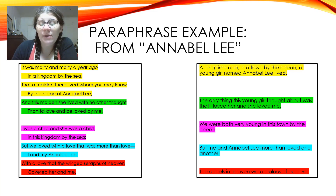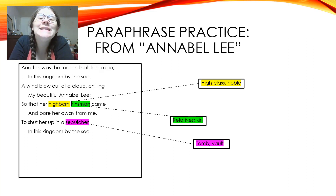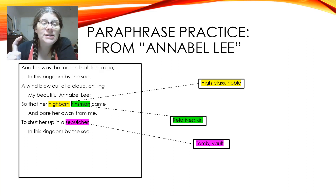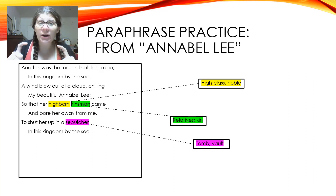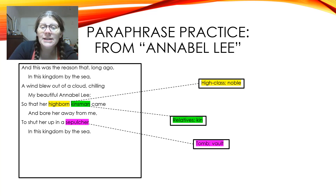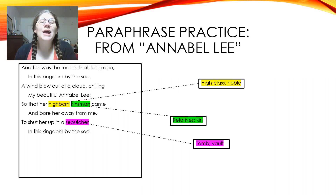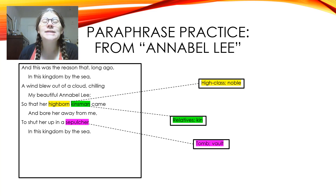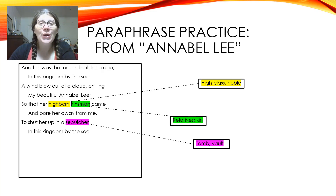I've paraphrased part of the poem and now it's time for you to practice paraphrasing a different part. You should have a small slip with this printed on it, or it might be in your Google Classroom. You should have a copy of this stanza and it's your turn to put it into your own words. A few vocabulary hints first: 'highborn' means high class or noble; 'kinsman' means relative, akin, kin folk; and a 'sepulchre' is a tomb or a vault. Alright, it's your turn — get to practice.